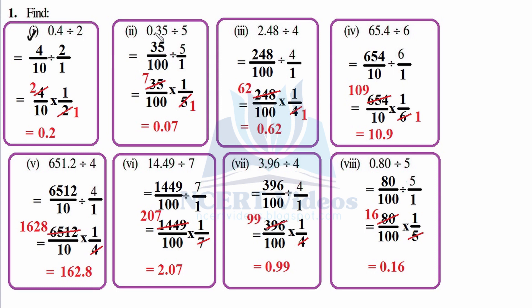For 0.35 divided by 5: write 35 over 100, then 1, then divide by 5 over 1. Now 35 by 100 as it is, division into multiplication and then flipping it gives 1 over 5. Cutting: 1×5 is 5, 7×5 is 35. Now writing 7 as it is, counting number of zeros — there are 2 — so the answer is 0.07.